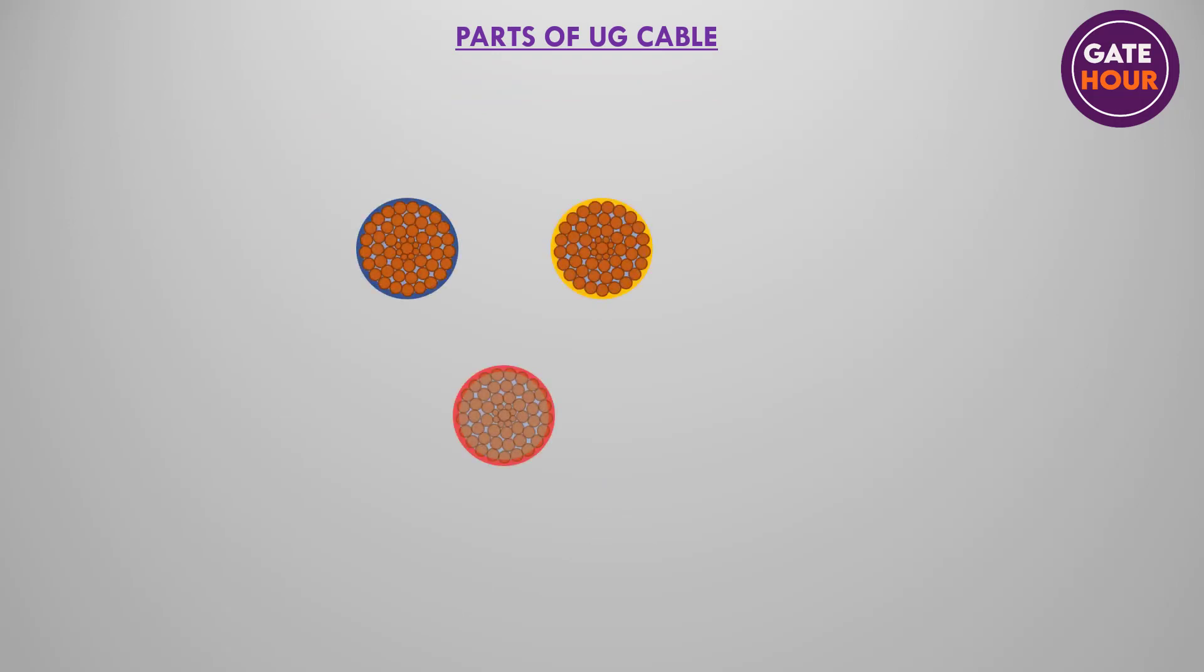All electric cables essentially have three parts. One, a conductor for transmitting electrical power. This is usually made up of stranded copper or aluminum conductors. It is known as the core of the cable. Based on number of cores, cables can be classified as single-core, double-core, three-core, or four-core cables.